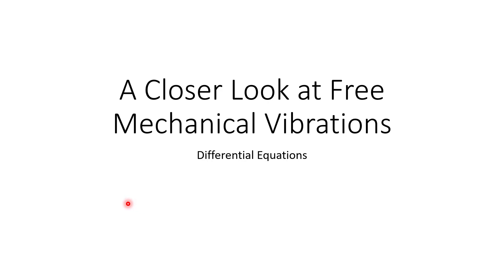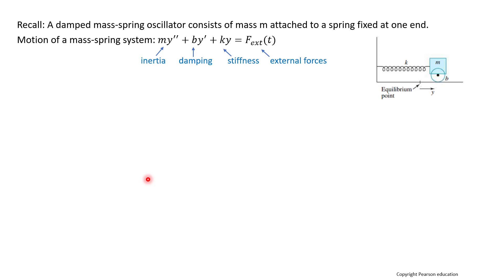Hi everyone, in this video we're going to be looking at mechanical vibrations, just a brief overview. So let's recall some things we've talked about previously. A damped mass-spring oscillator consists of a mass attached to a spring fixed at one end, and we have our second order differential equation to describe the motion of that system.